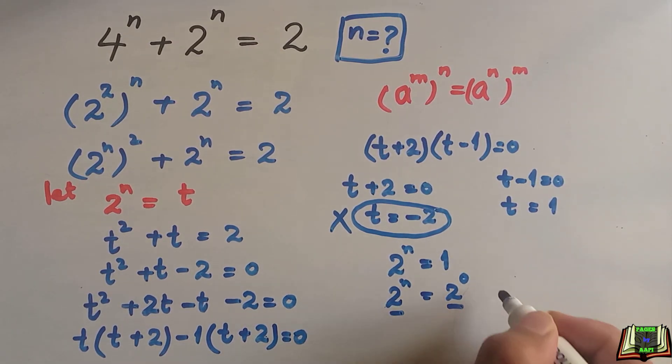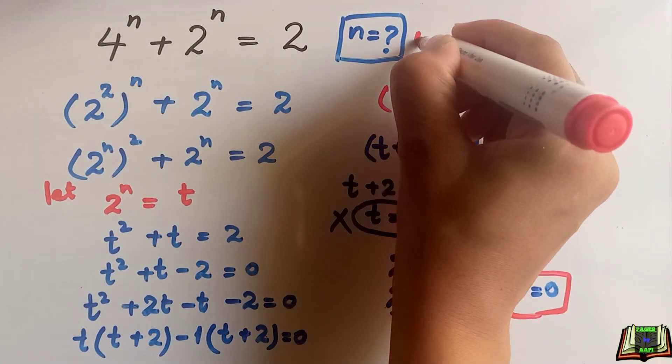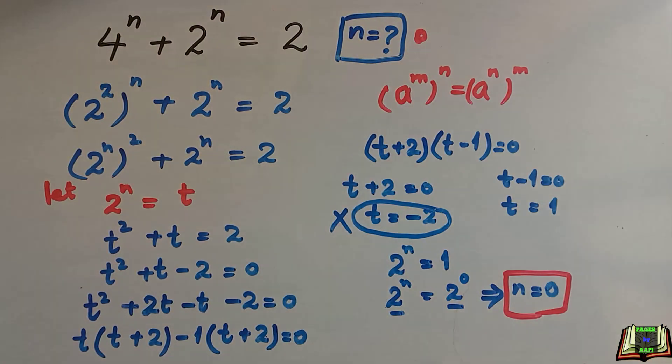As bases are the same and equal, exponents are also equal, so n is equal to 0. This means we got the value of n that is 0, which is required in this question.